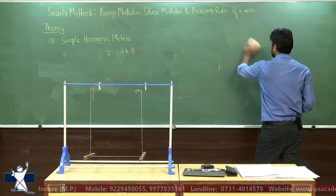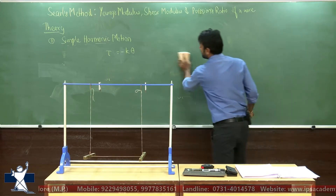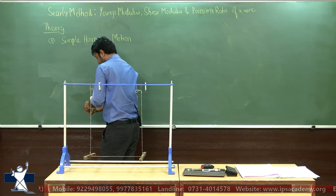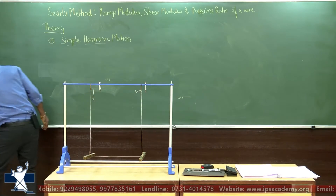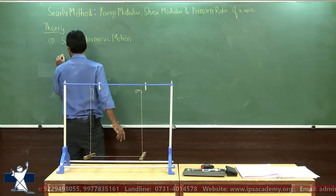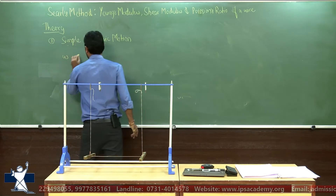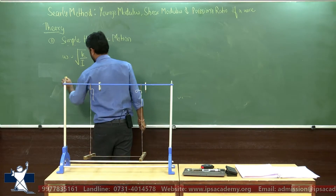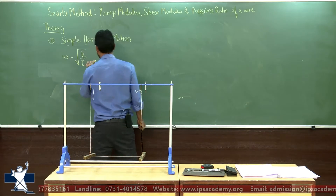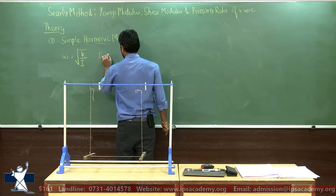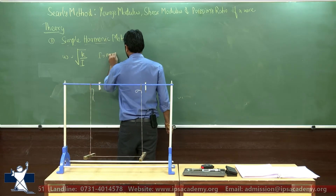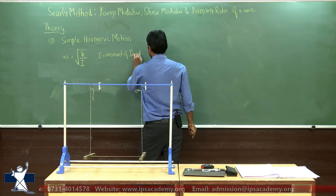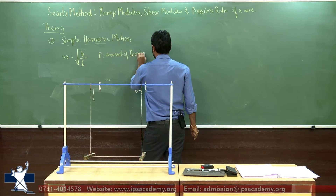For simple harmonic motion using angular oscillation, we write omega equals the square root of k/I, where I is the moment of inertia.